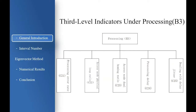This slide demonstrates the third-level indicators under the second-level indicator processing. There are five third-level indicators under processing: processing error rate, access node physical looping ratio, access node draw homing rate, processing delay, and processing delay jitter. We use this set as an example. There are 56 third-level indicators in total, and the number and type of third-level indicators can be adjusted according to the target network.